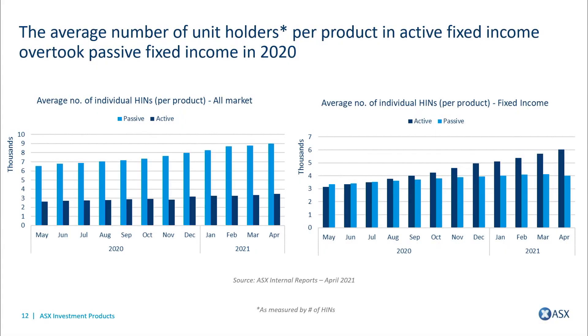These next charts look at the average number of unit holders per product listed on the ASX for exchange traded products. You can see how the average number of unit holders in passive or index tracking ETPs has been growing month on month — playing into the core satellite approach we're all familiar with. An interesting trend is that the average number of individual unit holders in active fixed income strategies actually overtook passive strategies in July-August of last year, perhaps representative of findings from the S&P SPIVA report that shows there's alpha to be found through active management in fixed income.